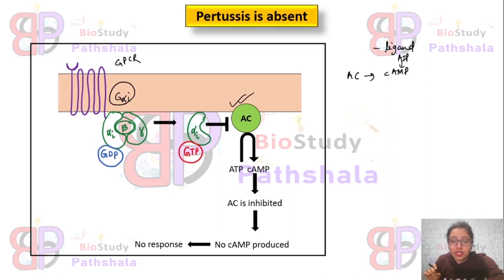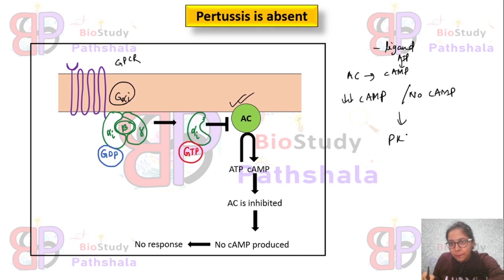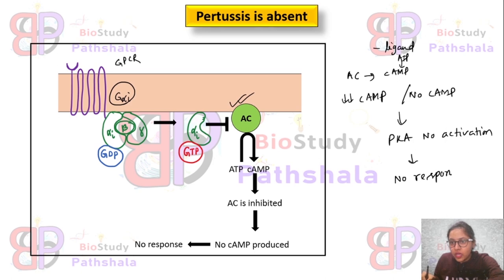If there is no or very low concentration of cyclic AMP, the further downstream procedures cannot occur — cyclic AMP cannot activate PKA. So there is no activation of PKA, and as a result, no responses will be observed when Pertussis toxin is absent.